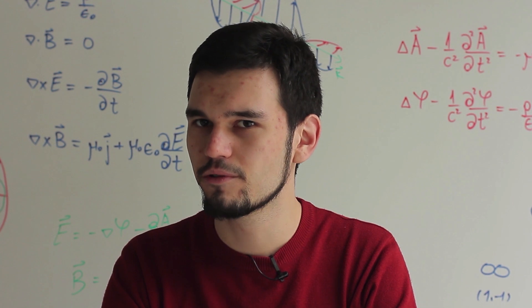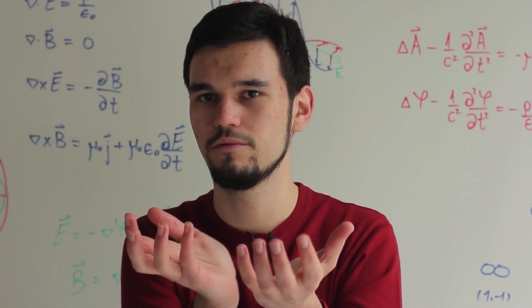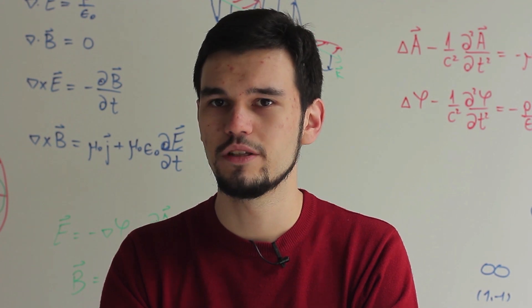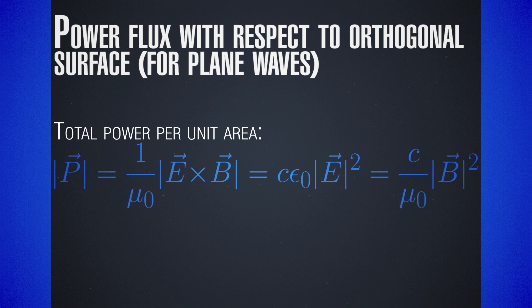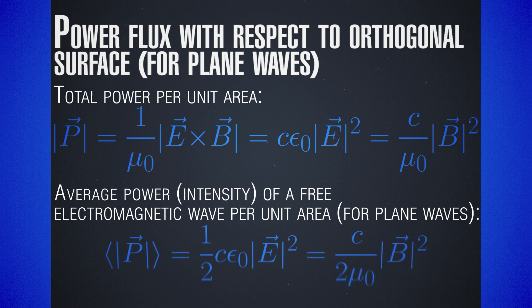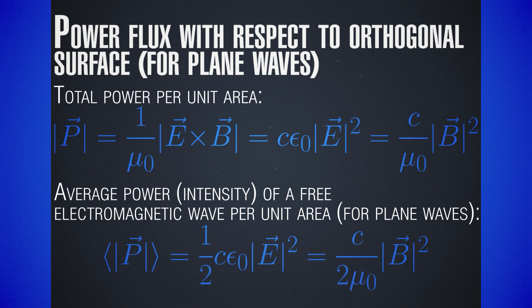If we integrate the Poynting vector on a closed surface, we get the full power which is exiting or entering the surface — the total energy per time. What we got earlier is that for a free wave, so for a plane wave, which were the sine or cosine waves, the Poynting vector is essentially a constant. It depends on the amplitude of the electric or magnetic field squared, but the power density is constant.